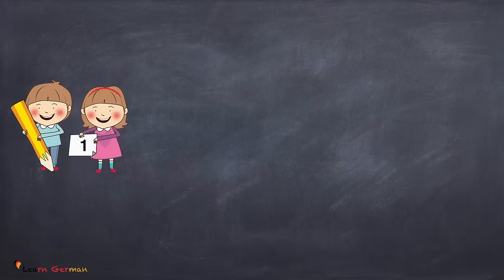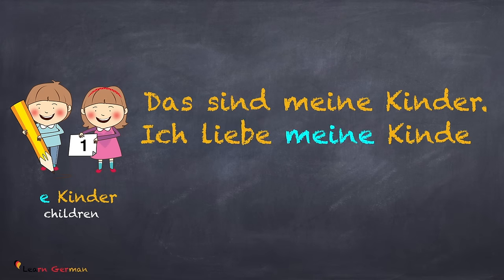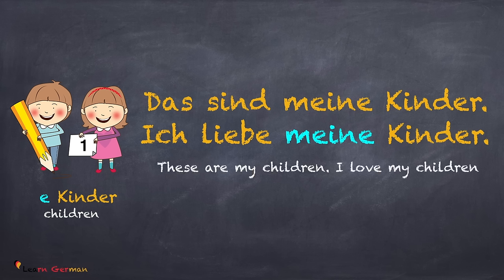And similar is the case for plural. Das sind meine Kinder. Ich liebe meine Kinder. In the case of a plural object in the Akkusativ, meine remains meine.